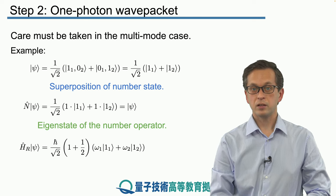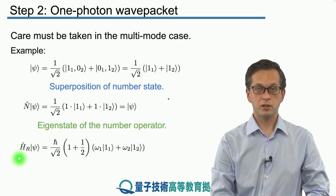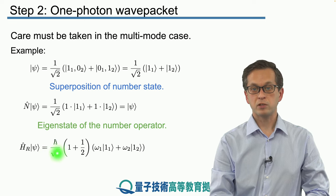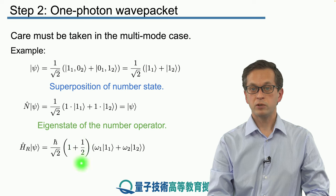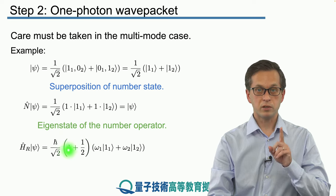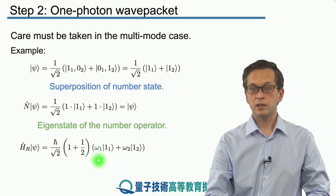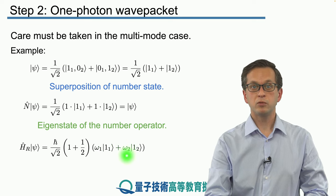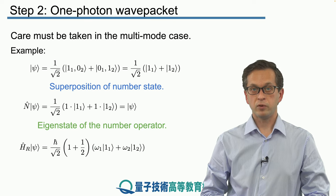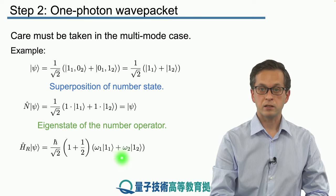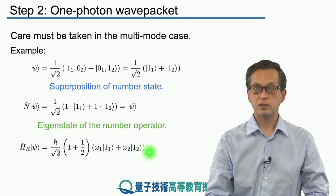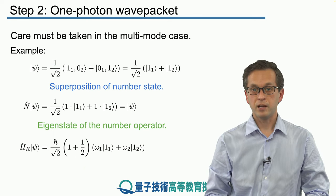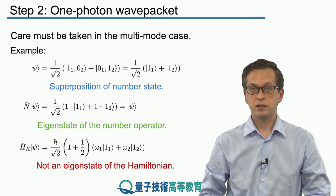Now let's substitute psi into the eigenvalue equation for the energy. The total Hamiltonian acting on state psi gives h-bar over square root of 2 times (1 + 1/2), with omega_1 times the first term and omega_2 times the second term. So unless the two modes are of the same frequency, the state on the right-hand side is not the same as psi. In other words, psi is not an eigenstate of the total Hamiltonian.